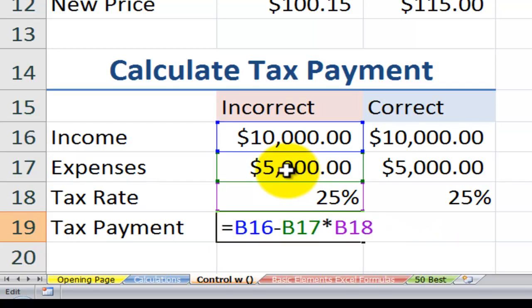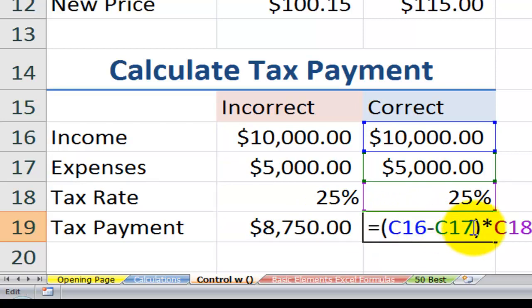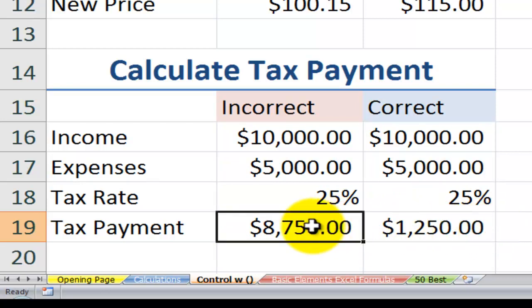Well, again, if we don't understand the order of precedence, what we really need to do is put a left and a right parentheses around this cell reference, or these two cell references. In other words, we want the result of income minus expenses to be multiplied by the tax rate. So if you want to overpay on your taxes by a considerable amount, be my guest.